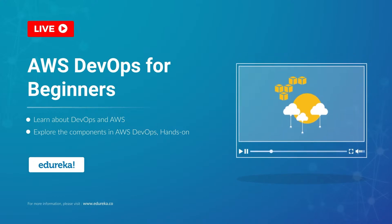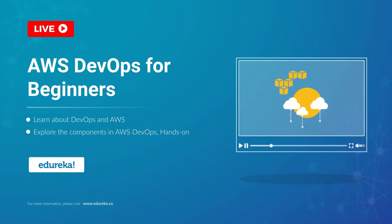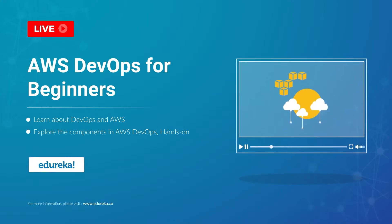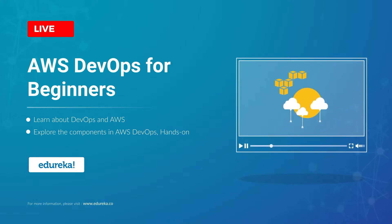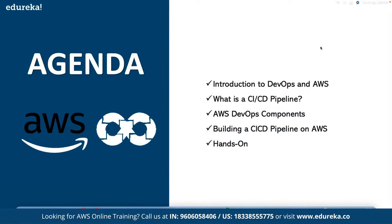Here we are going to discuss AWS DevOps, where we'll be talking about how DevOps can be implemented using the core services offered by AWS. We'll be discussing DevOps and the lifecycle phases of it, how to build a CI/CD pipeline, and then discussing the DevOps components and building a CI/CD pipeline on AWS.